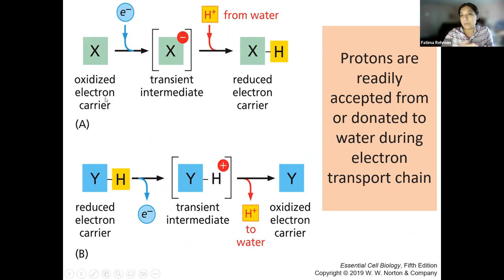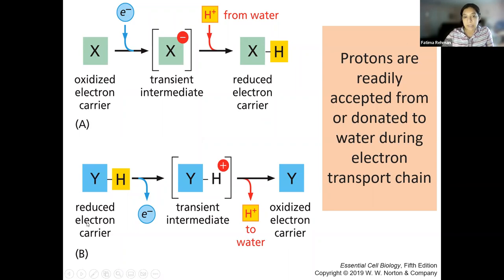Protons are getting readily accepted and donated throughout this process. With an oxidized electron carrier, you have a transient intermediate where you take in electrons and take protons from water to create a reduced electron carrier. With a reduced electron carrier, you give off electrons and give off protons to water to create an oxidized electron carrier. Throughout the electron transport chain, two things you need are oxygen and water, because they help this process along.